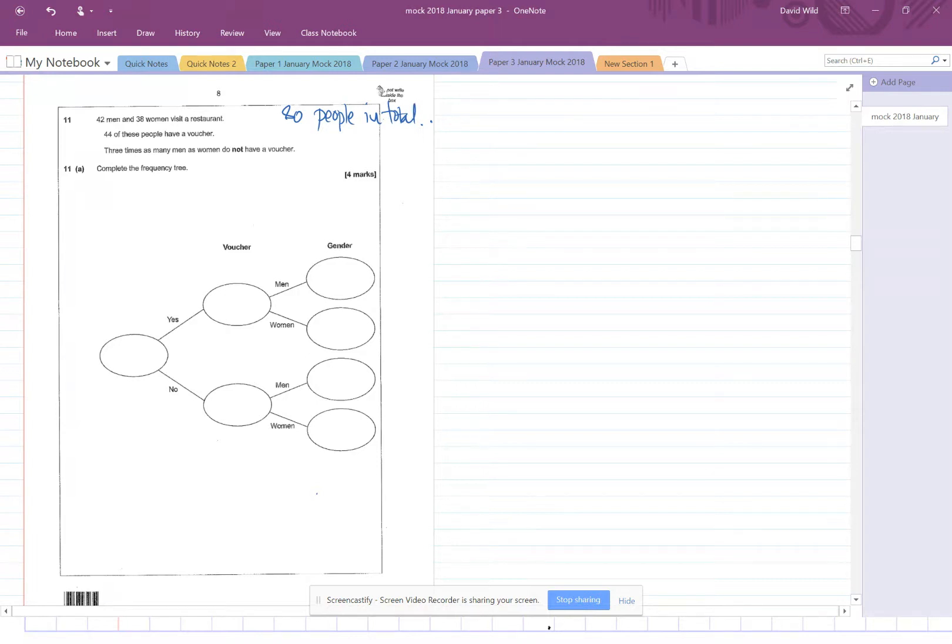Okay, 44 of these people have a voucher. And three times as many men as women do not have a voucher. Complete the frequency tree. Alright.